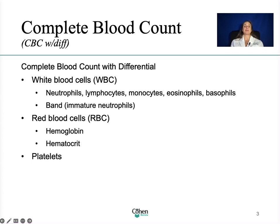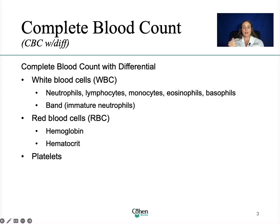Then we have platelets. Platelets' primary function is to help the blood with clotting so we don't bleed out. High levels of platelets are found with inflammation such as vasculitis or inflammatory arthritis, with anemia, with trauma and burns because the body's trying to clot, heart attack, some kind of inflammation, chronic infections, allergic reactions, lymphoma, and some medications.